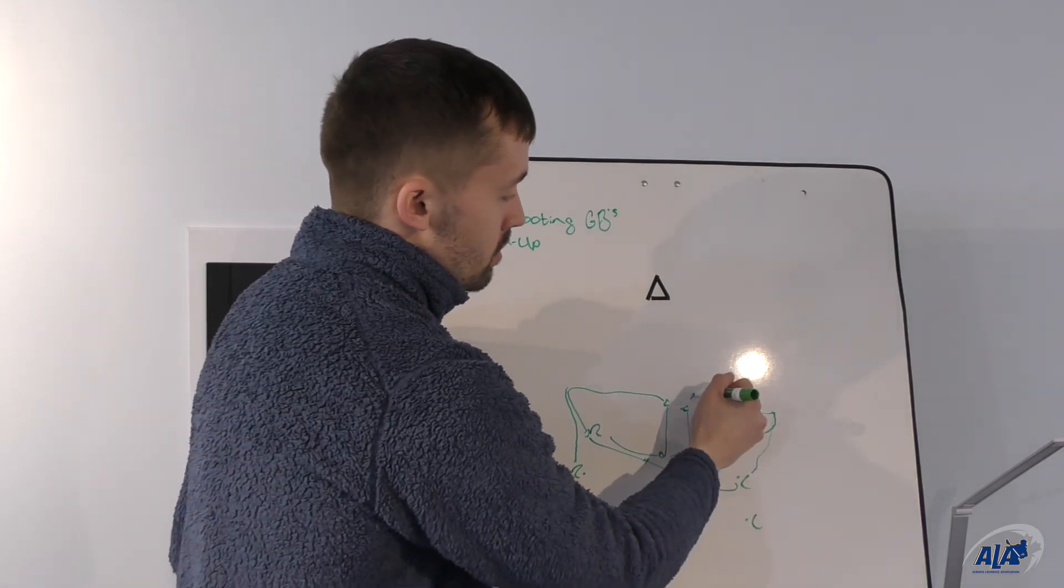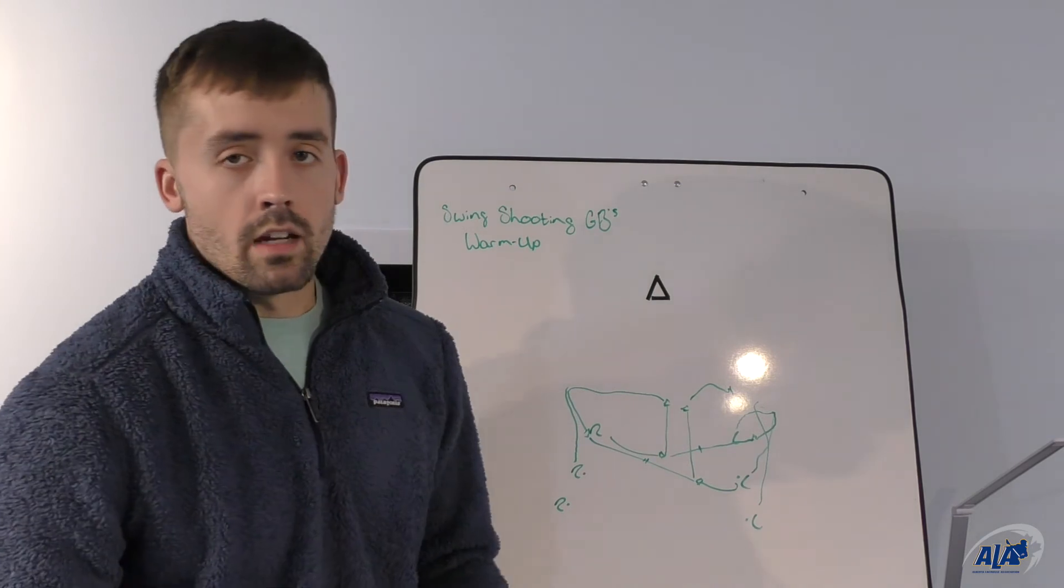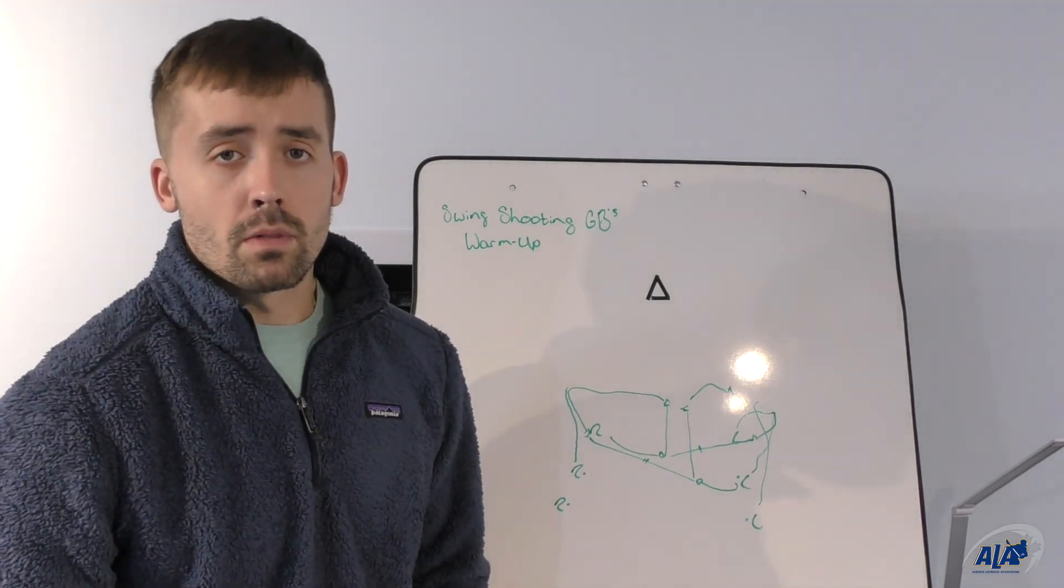After that left-handed player shoots, they'll find the ball that was rolled in from the next lefty in line, and it'll be continuous, and we'll get lots of shots from the top of the floor.